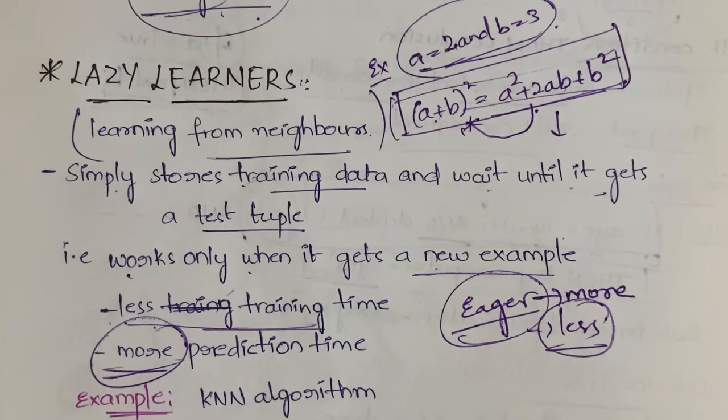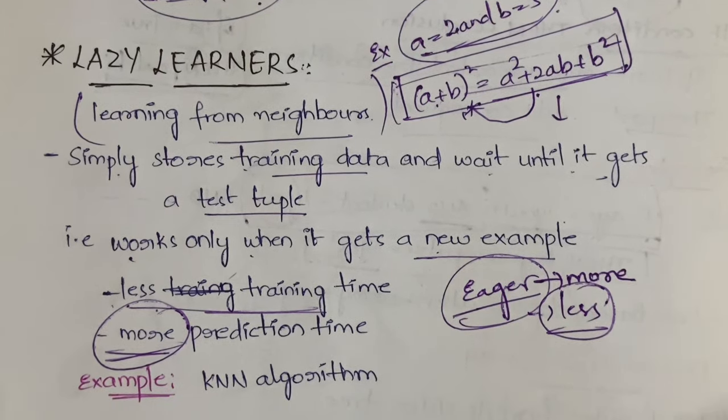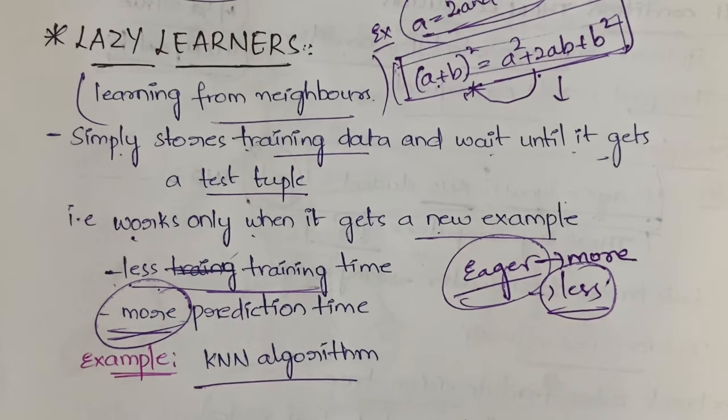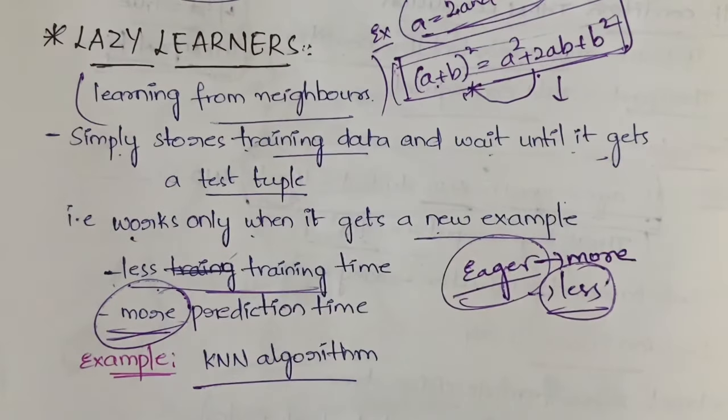The example for lazy learners is KNN algorithm. So in the exam, if you're asked to write about KNN or lazy learning, you have to write these few points and then write about the KNN algorithm.